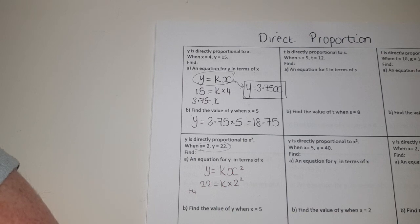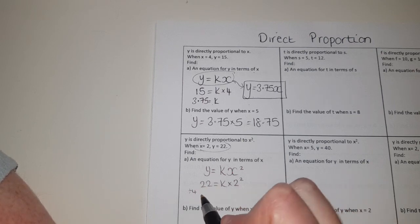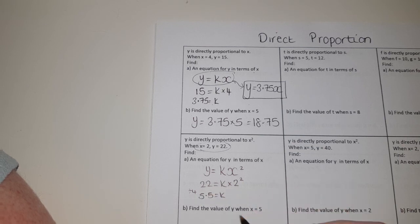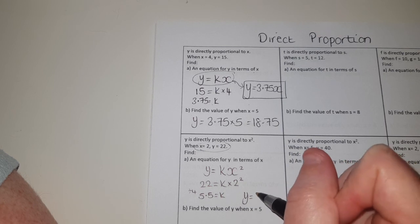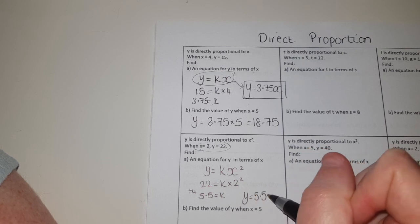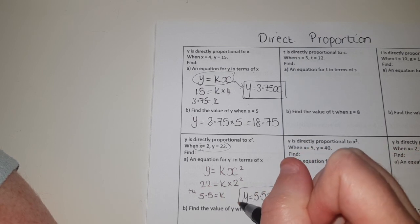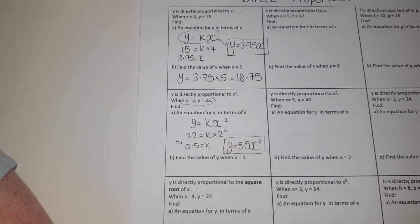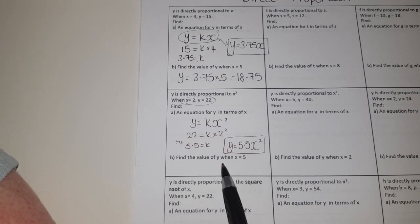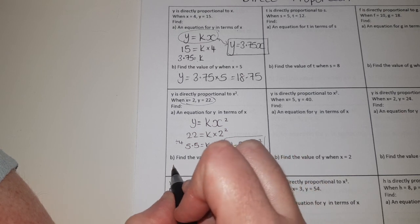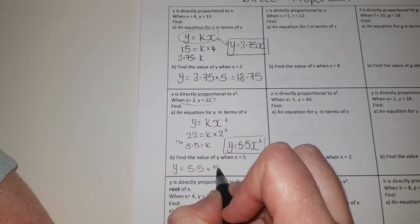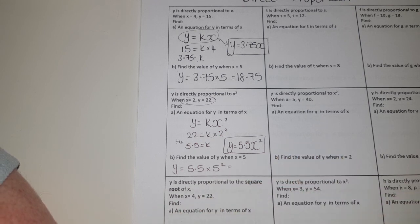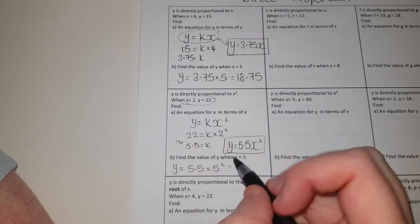So k is equal to 5.5. That means my equation linking them together is y equals 5.5 x squared. That's my equation that links y and x together. Second part, find the value of y when x equals 5. Well y equals 5.5 times 5 squared, that's going to give us 137.5, and that's it.